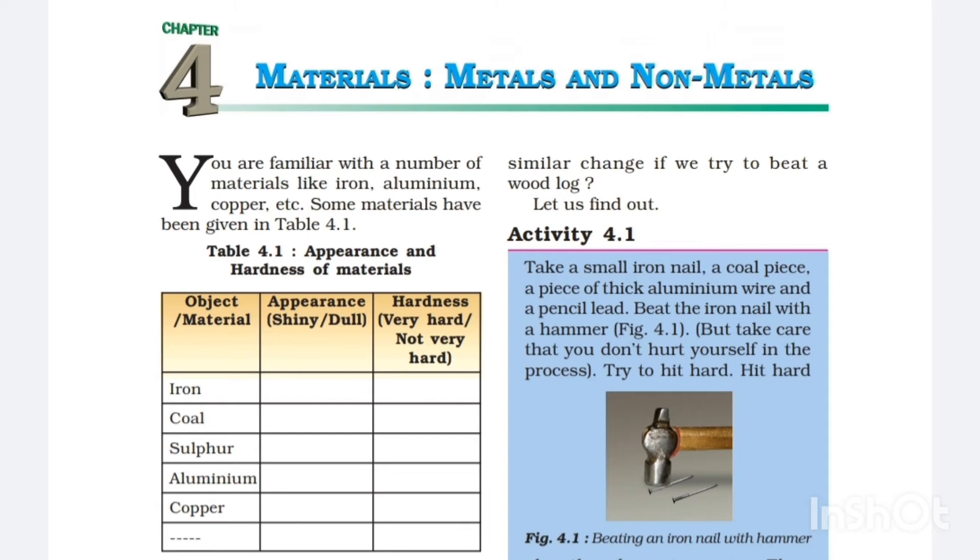So we have read the paragraph and here's the activity given for that. Activity 4.1: Take a small iron nail, a coal piece, a piece of thick aluminium wire, and a pencil lead. Beat the iron nail with a hammer. Figure 4.1 is showing the thing. But take care that you don't hurt yourself in the process. It's very important. Try to hit hard.